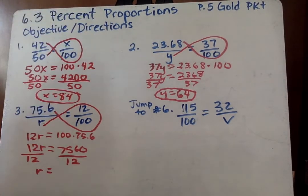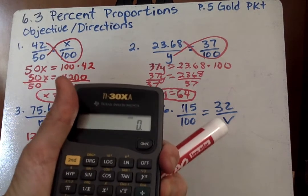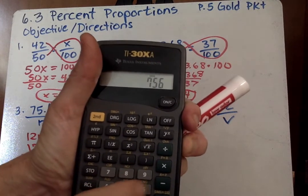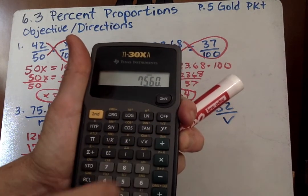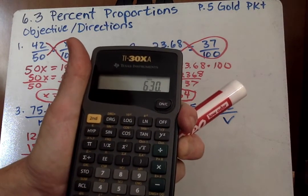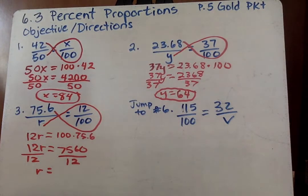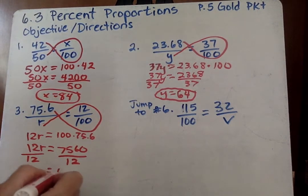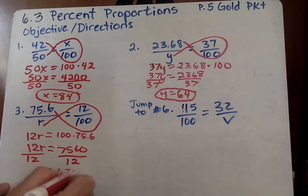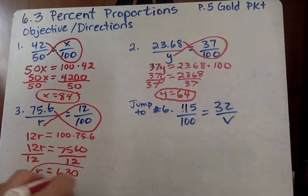R equals. Hopefully you're getting used to seeing different letters as our variable. So 75.60 divided by 12. 630.